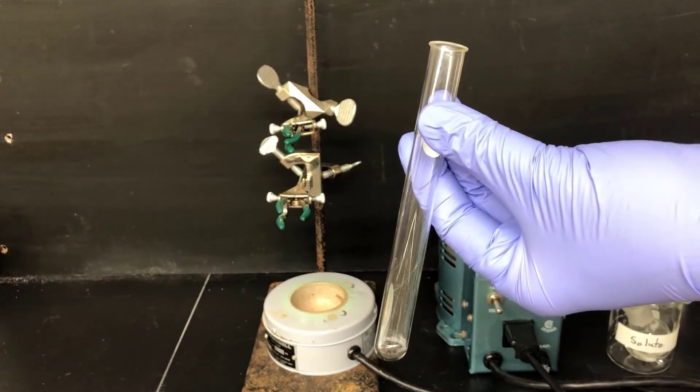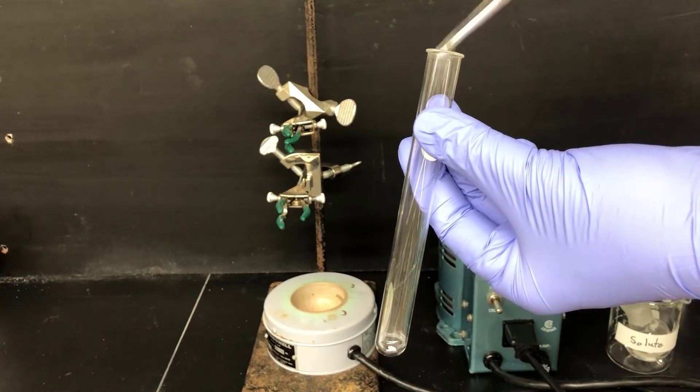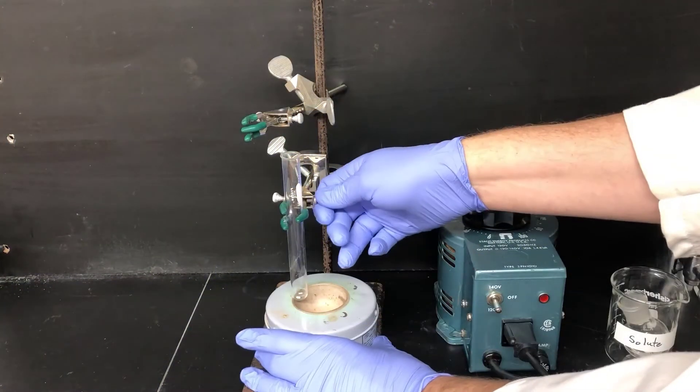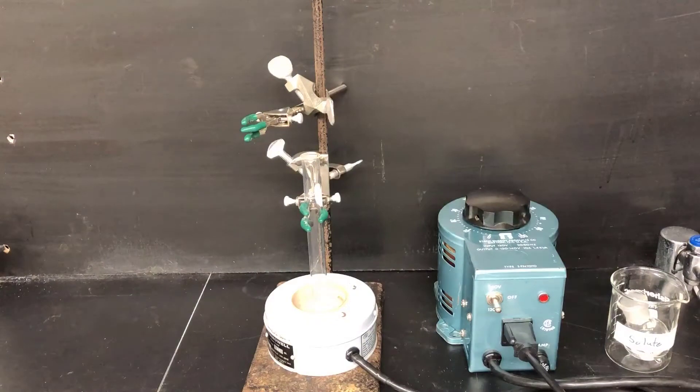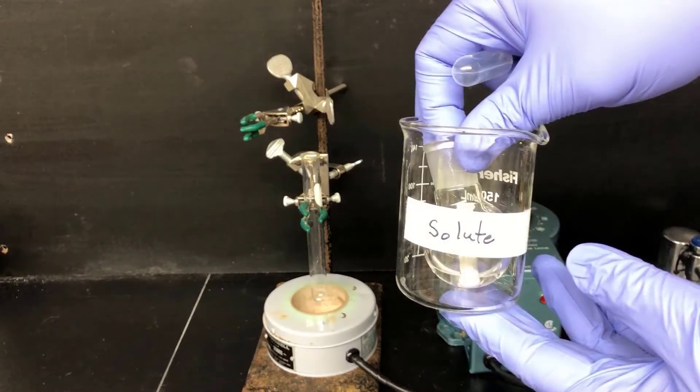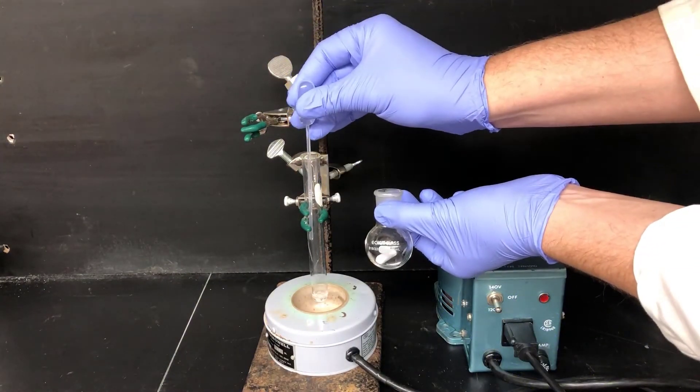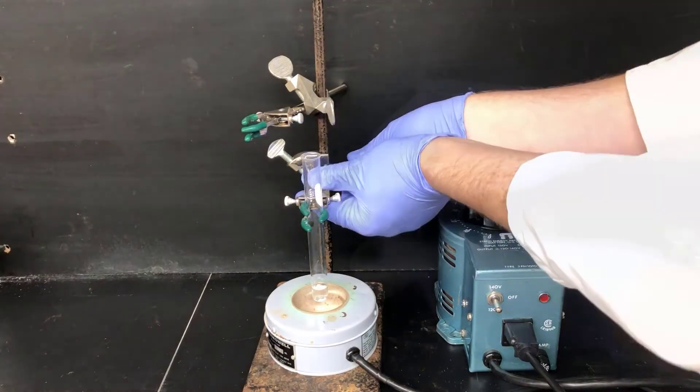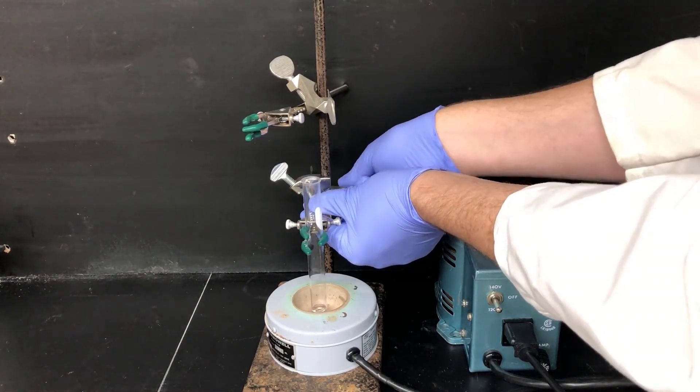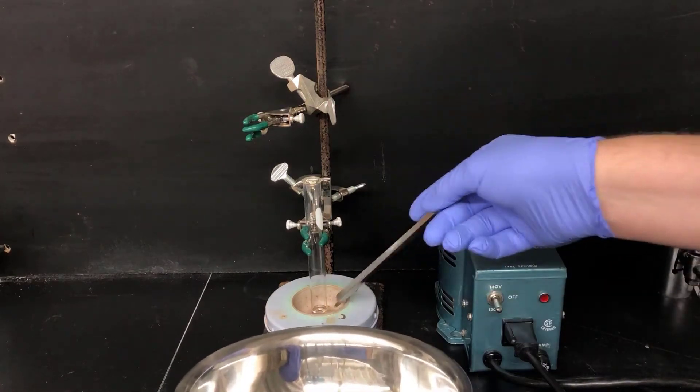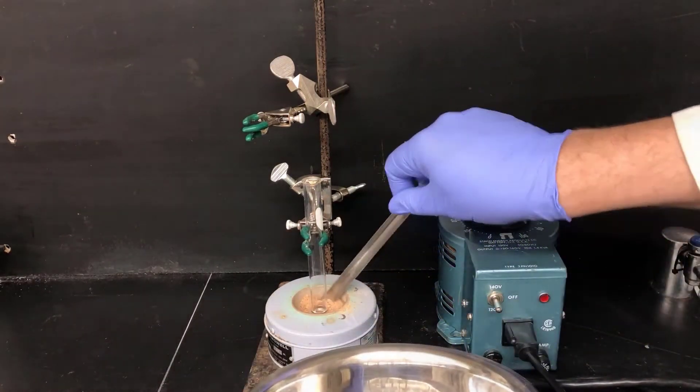I'll start by putting some boiling stones into a medium-sized test tube. Then I'll clamp that test tube to a ring stand above a heating mantle that's plugged into a variable transformer. Now I'll pipette a couple of milliliters of my unknown solute into this test tube. Then I'll lower the test tube down so that it makes contact with the surface of the heating mantle. Then I'll mount some sand around the test tube to serve as a heat transfer medium.